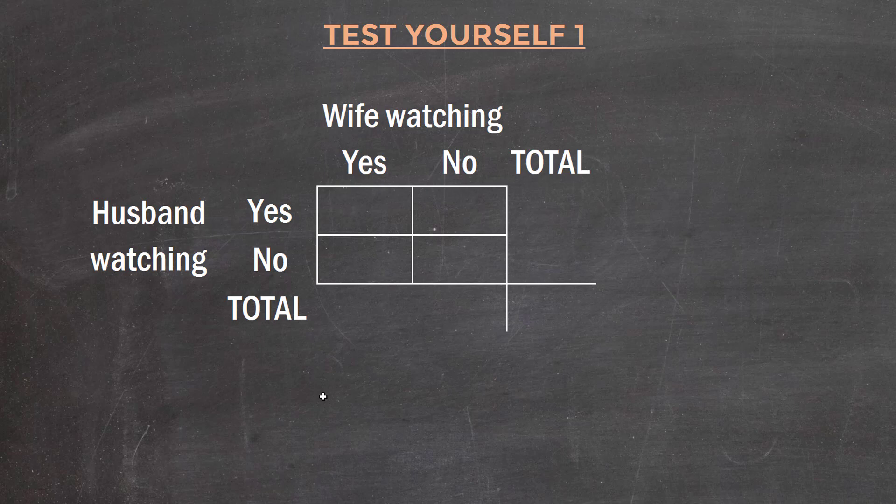The first thing we're going to do is put together a table. We know in this case we've only got two random variables: whether the husband's watching, yes or no, and whether the wife is watching, yes or no. So the joint probability distribution is only going to account for four potential joint events.